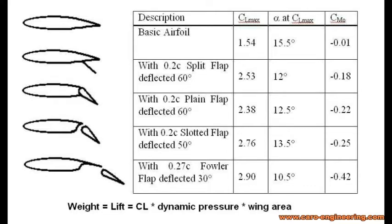The CL of the whole airplane is not the same as the two-dimensional airfoil section CL, because some other parts like the fuselage and tail also produce lift in various directions, not just the wing. To keep the story short, we can assume that the airplane CL max is usually a little lower than the airfoil CL max.